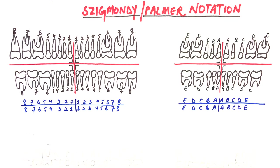Unlike the Palmer system, the universal system is more acceptable to computers and creates much less confusion. Therefore, the universal tooth numbering system was officially recommended by the American Dental Association in the year 1968.